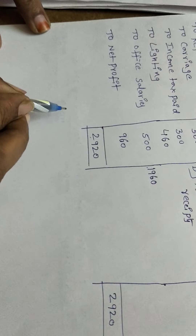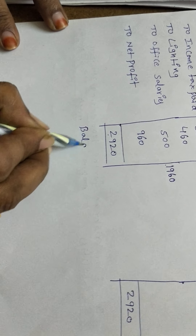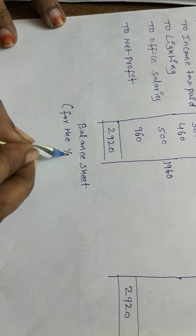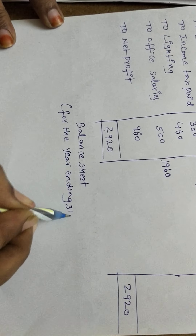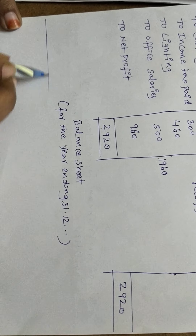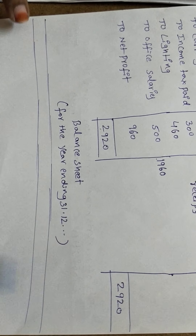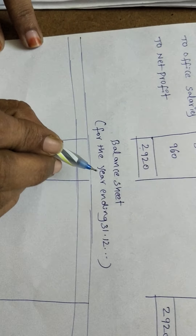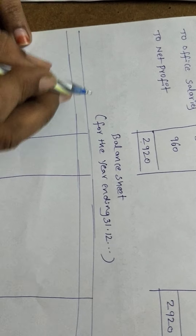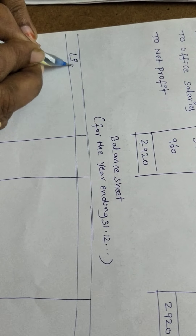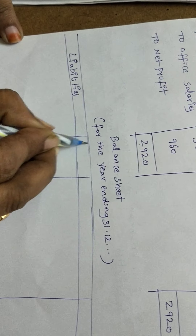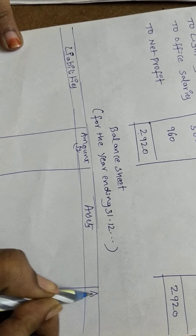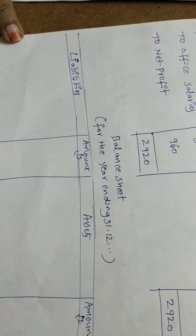Now we prepare the balance sheet. The heading is important: 'Balance sheet for the year ending 31st December' — but the date and name are not given. This is not an account, it is a statement, so we do not write DR or CR. Left-hand side heading is 'Liabilities'; right-hand side heading is 'Assets', each with an amount column in rupees.